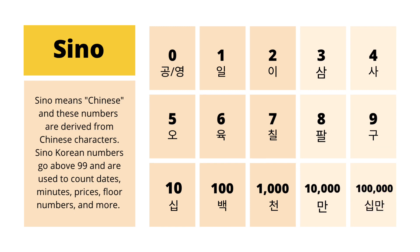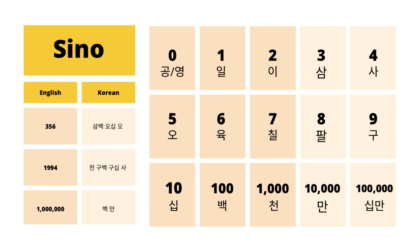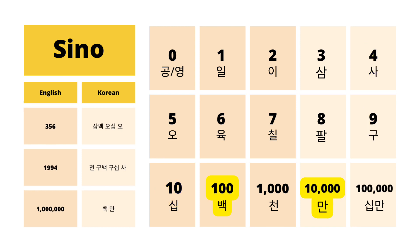If you want to express large numbers, you simply stack the numbers together. Here are some examples. If you want to say 356, it would be 356. 1994 would be 1,994. And 1,000,000 would be 100,000.